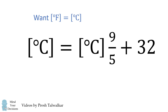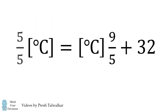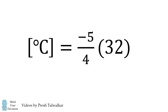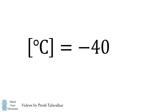We now have an equation in one variable. We'll write 5 over 5 for 1. We now subtract 9/5 degrees Celsius from both sides. We then multiply both sides by negative 5 over 4, and we get the answer of negative 40 degrees Celsius is exactly equal to negative 40 degrees Fahrenheit.